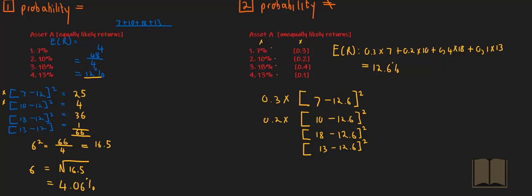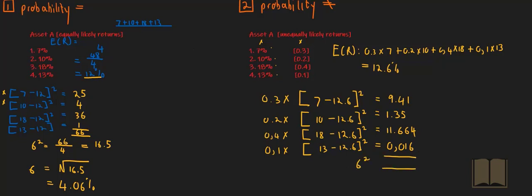The first deviation is multiplied by its probability of 0.3, the second is multiplied by 0.2, the third is multiplied by 0.4, and the last one is multiplied by 0.1. This equates to the following values: the first one is 9.41, the second weighted deviation multiplied by its probability gives you 1.35, the third one gives you 11.664, and the last one gives you 0.6. The summation of this gives you your variance, which amounts to 22.4.